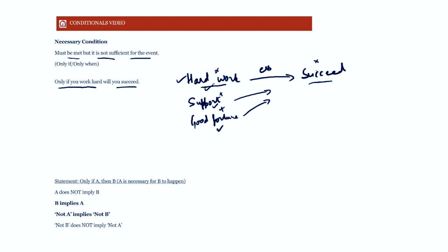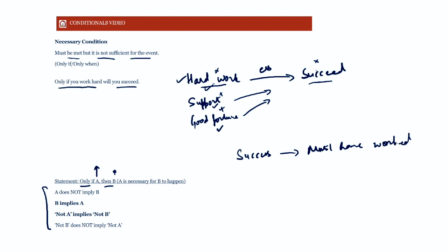So the point is: hard work is one of the essential elements to succeed. Without it, success will certainly not happen, but it alone may not be sufficient — you may need other factors too. When all necessary conditions are added together, then the event may happen. This is written as 'only if A then B,' meaning A is necessary for B. For a necessary condition, B implies A.